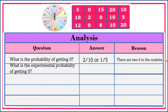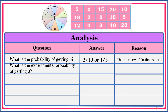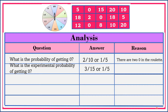What is the experimental probability of getting zero? If the question is experimental probability, let's refer our answer to the table. We have three zeros here. Then the experimental probability is 3 over 15 or 1 fifth.